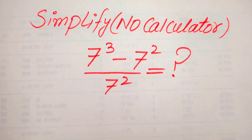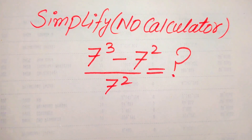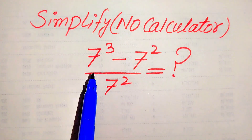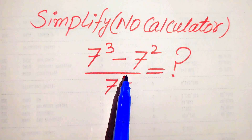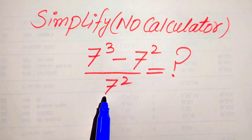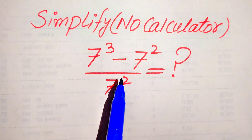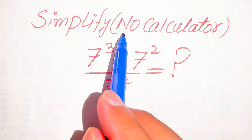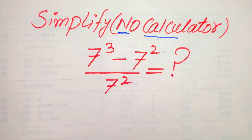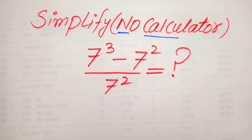Hello everyone. How to simplify this nice algebraic expression: 7 cubed minus 7 squared, divided by 7 squared. Calculator is not allowed in this problem, which means we will show all of the working here.